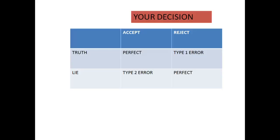So, if you are accepting a truth it is perfect, and if you are rejecting a truth that becomes Type 1 error. The second scenario is about a lie — if you are rejecting a lie that is okay, but if you are accepting a lie that becomes Type 2 error. With more examples you'll get the concept very clear.